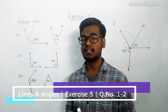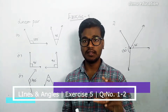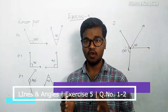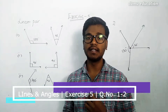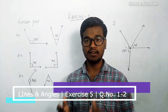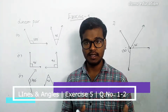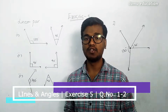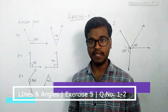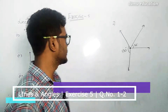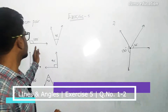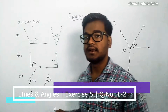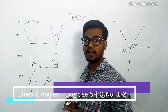We need to make the angles adjacent, and if the two angles give 180 degrees then we can call them a linear pair, otherwise they are not a linear pair. So let's take the first question: 135 degrees and 45 degrees.